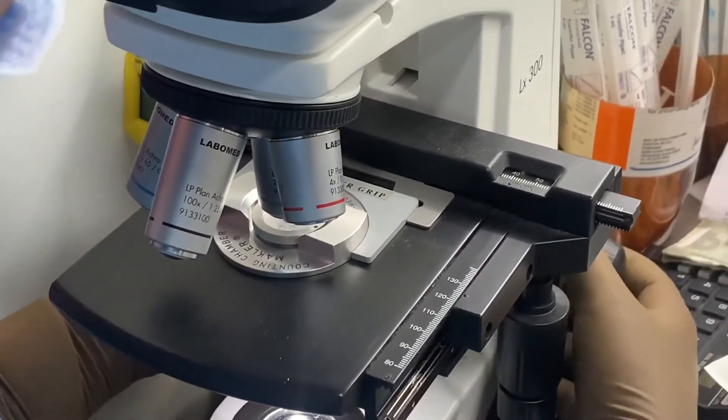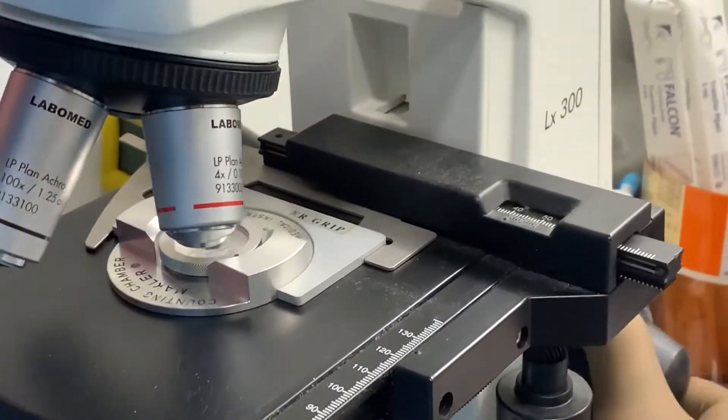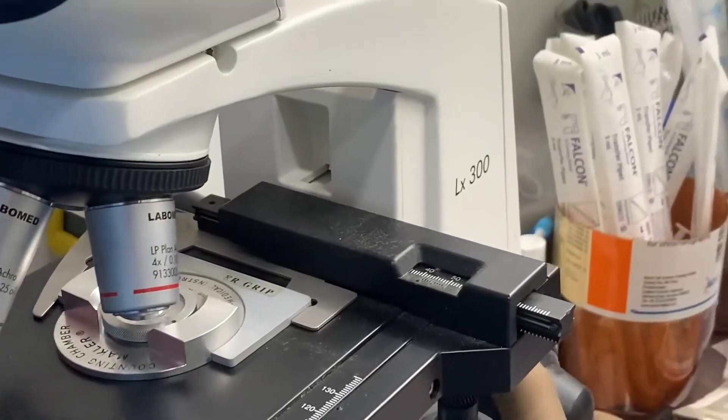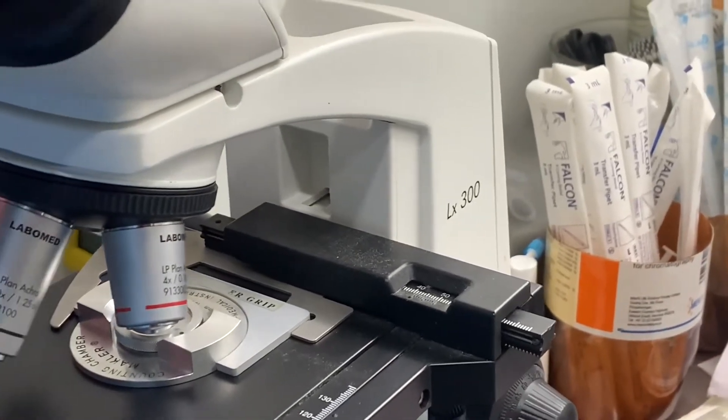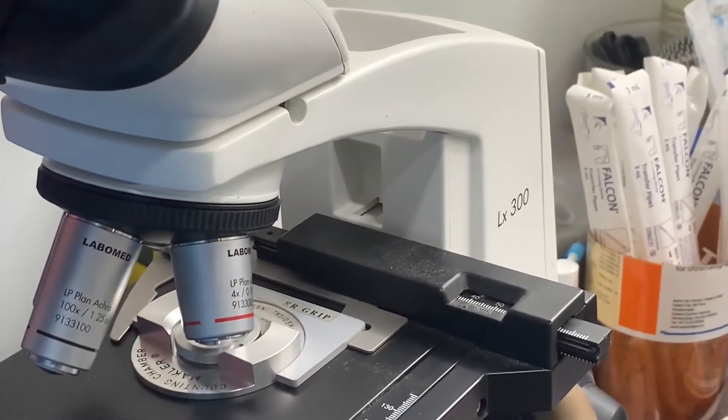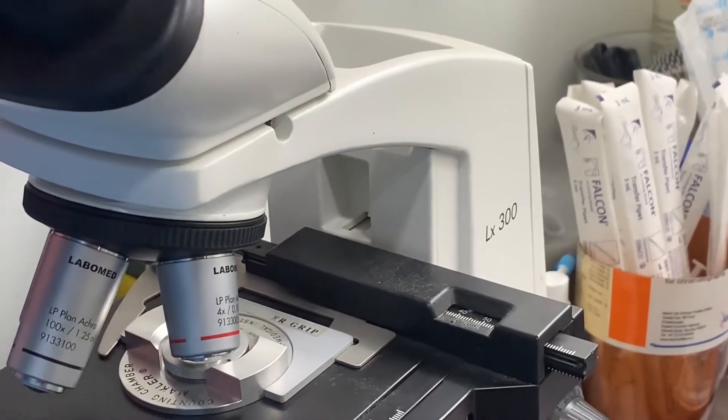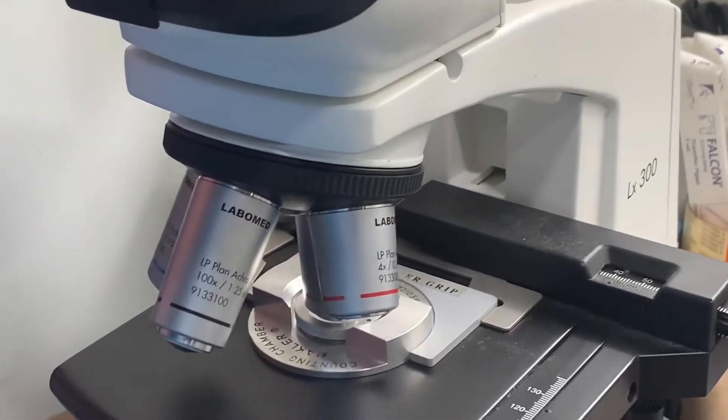Then that to be seen under microscope. Whether proper number of sperm is there or not, that to be noted. How many motile sperm? A-grade, B-grade and non-motile sperm.